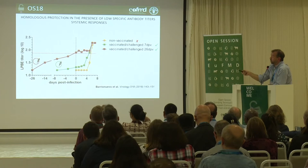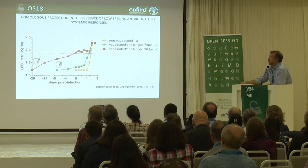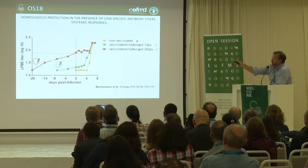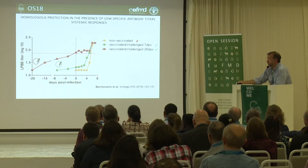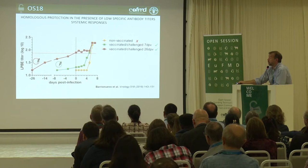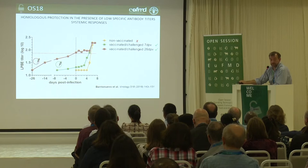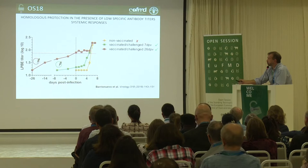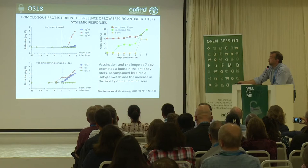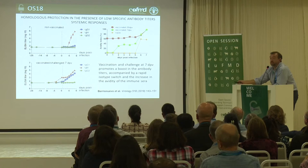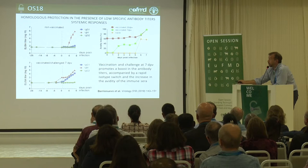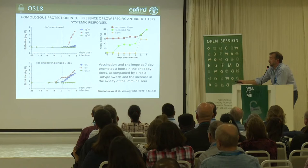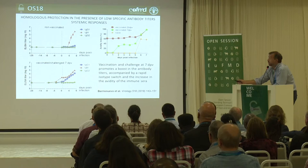From a recent paper, using a very limited number of animals: one animal vaccinated and challenged 26 days after vaccination, one challenged seven days after vaccination, and one naive. Both vaccinated animals were protected; the naive was not. There were not too many differences in ELISA titers. After the challenge, naive animals developed a primary IgM response with no IgG1, while the vaccinated animal challenged at seven days showed a really fast IgG1 response after challenge.